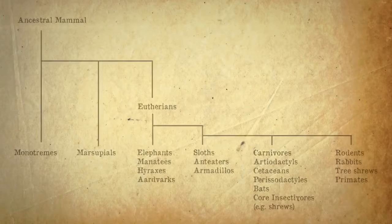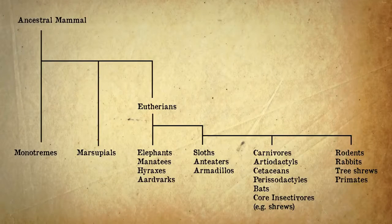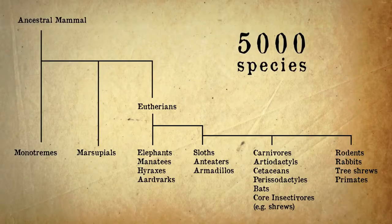Once inside a class — mammals for example — different species are grouped together in even more detail. There are about 5,000 species of mammals, classified into three subclasses and about 26 orders.